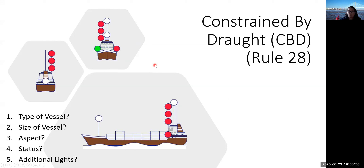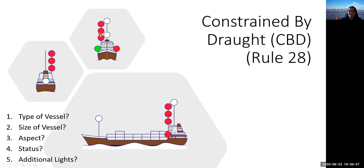Constrained by draft — remember the black cylindrical can of Guinness. The main vessel's lights remain the same (power-driven, over 50 meters, two masthead lights, port side showing, underway and making way), and now the additional lights are three all-round red lights. From no matter where you are you should see them — from the stern and from the bow. Work through it: navigation lights plus masthead light, power-driven; two masthead lights, over 50 meters; underway making way; three all-round reds, constrained by draft.